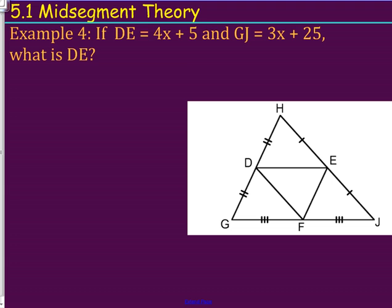So, let's fill some of those values in. So, we have DE is 4X plus 5. And we have GJ all the way down here is 3X plus 25.